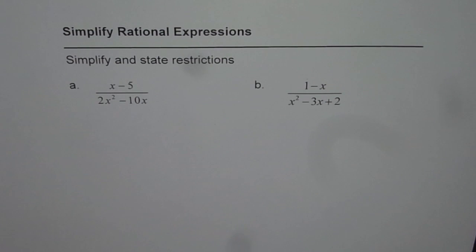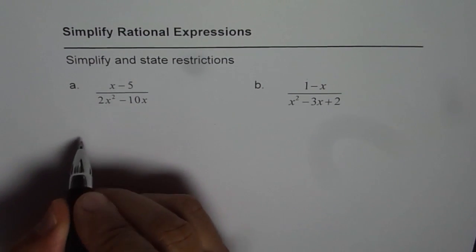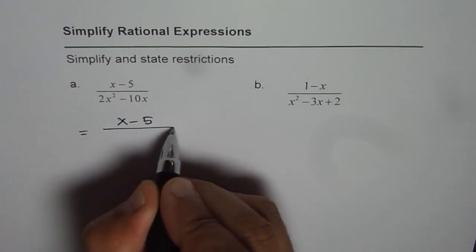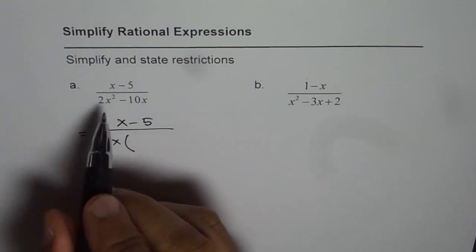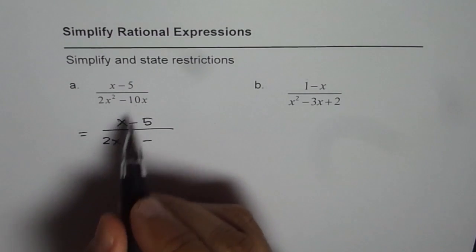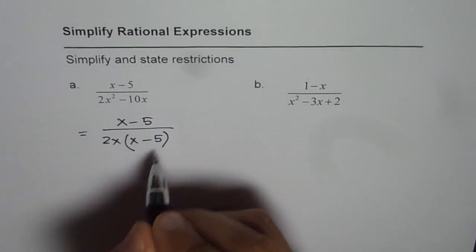The denominator has a common factor of 2x, so we can factor it as 2x times (x minus 5). When you divide 2x squared by 2x, you get x. When you divide 10x by 2x, you get 5.